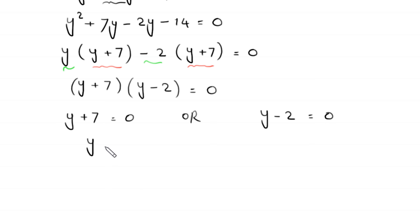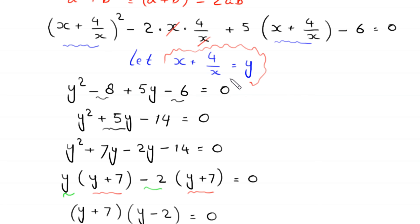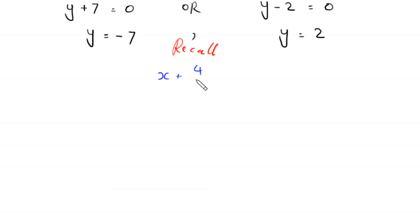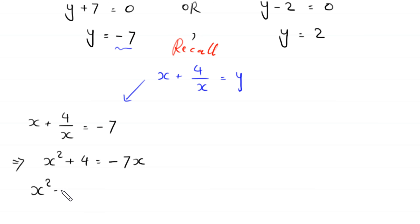Recalling that we supposed x plus 4 over x equals y: when y equals negative 7, the equation becomes x plus 4 over x equals negative 7. Multiplying both sides by x gives x squared plus 4 equals negative 7x. Moving the negative 7x to the left hand side gives x squared plus 7x plus 4 equals 0.